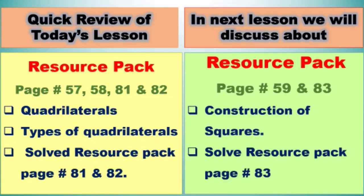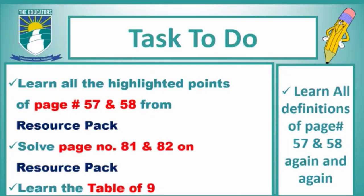Let's take a quick review of today's lesson. We have done resource pack pages 57, 58, 81, and 82. We also discussed quadrilaterals and types of quadrilaterals. In our next lesson, we will discuss resource pack pages 59 and 83, and will also discuss the construction of squares. Task to do: learn all the highlighted points of page number 57 and 58 from the resource pack, solve page number 81 and 82, and learn the table of 9. Learn all the definitions of page number 57 and 58 again and again.